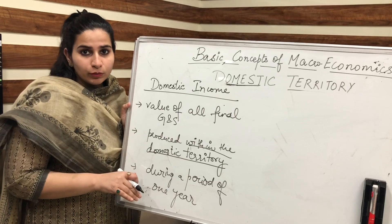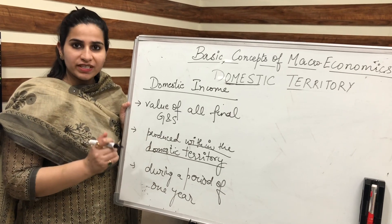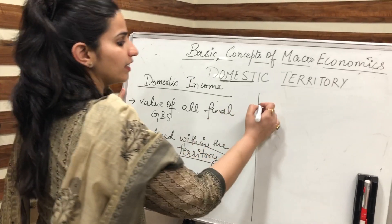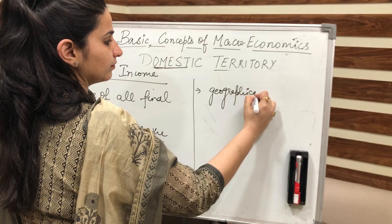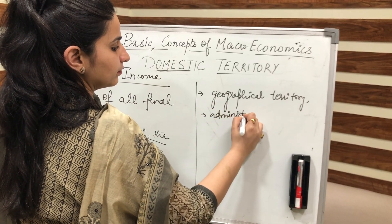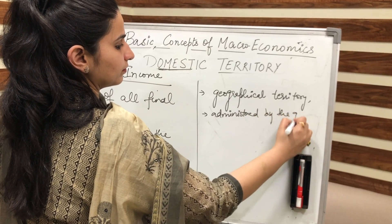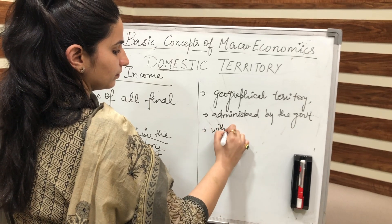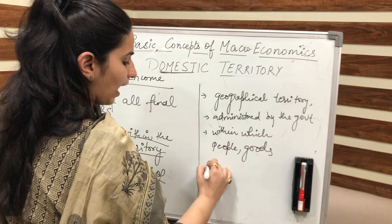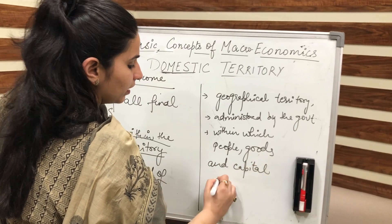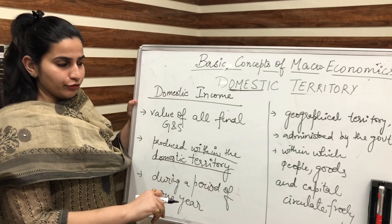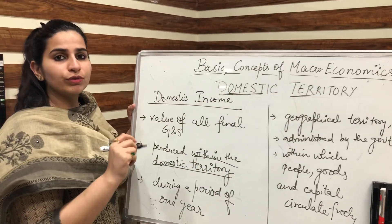It means what to be included and what to be excluded to calculate domestic income of any country. As per the United Nations, the meaning of domestic territory is that it includes the geographical territory within which people, goods, and capital circulate freely. Domestic territory is also known as economic territory.